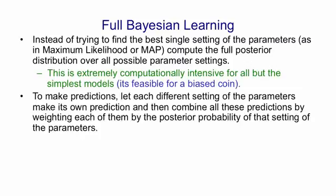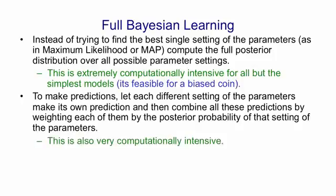After we've computed the posterior distribution across all possible settings of the parameters we can then make predictions by letting each different setting of the parameters make its own prediction and then averaging all those predictions together weighting by their posterior probability. This is also very computationally intensive.